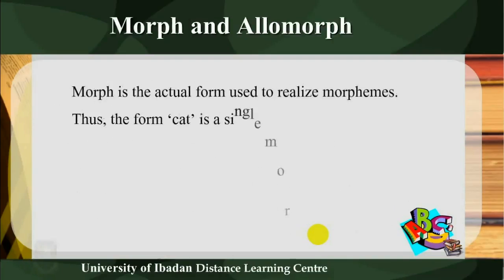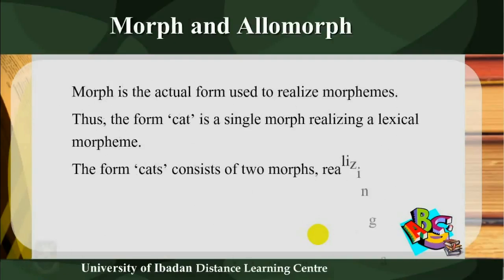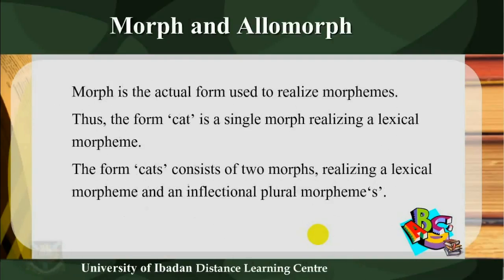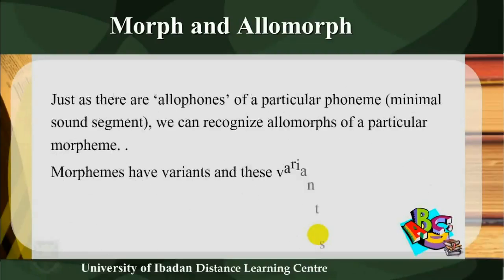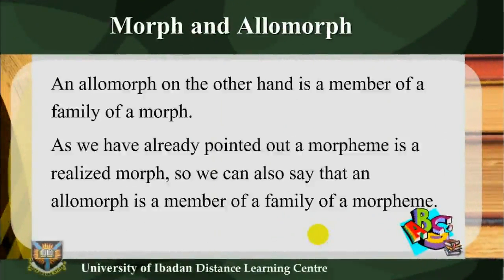Morph and allomorph: morph is the actual form used to realize morphemes. Thus the form 'cat' is a single morph realizing a lexical morpheme. The form 'cats' consists of two morphs realizing a lexical morpheme and an inflectional plural morpheme. Just as there are allophones of a particular phoneme, we can recognize allomorphs of a particular morpheme. Morphs have variants, and these variants are called allomorphs.